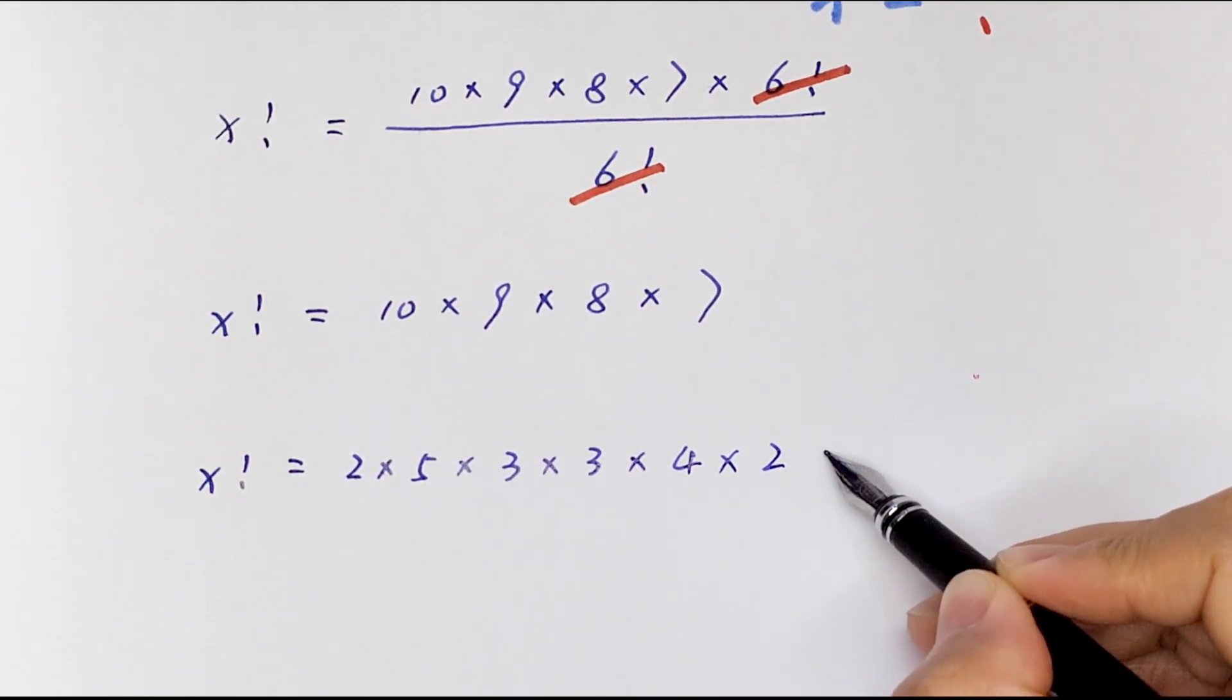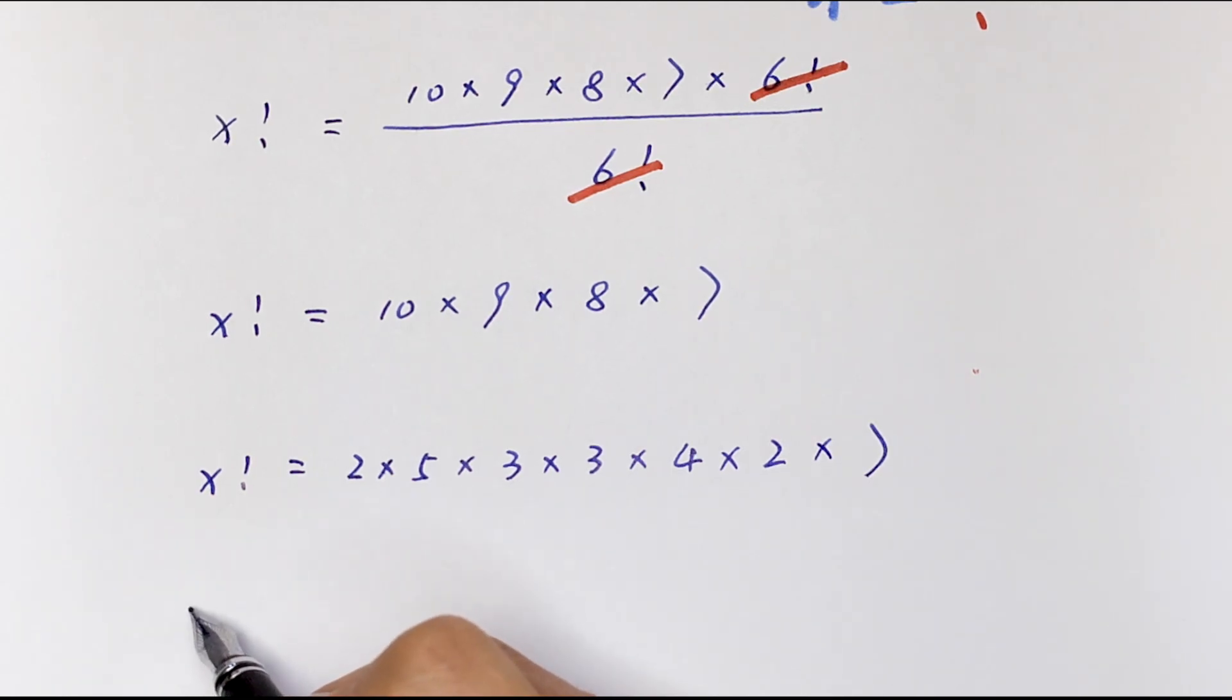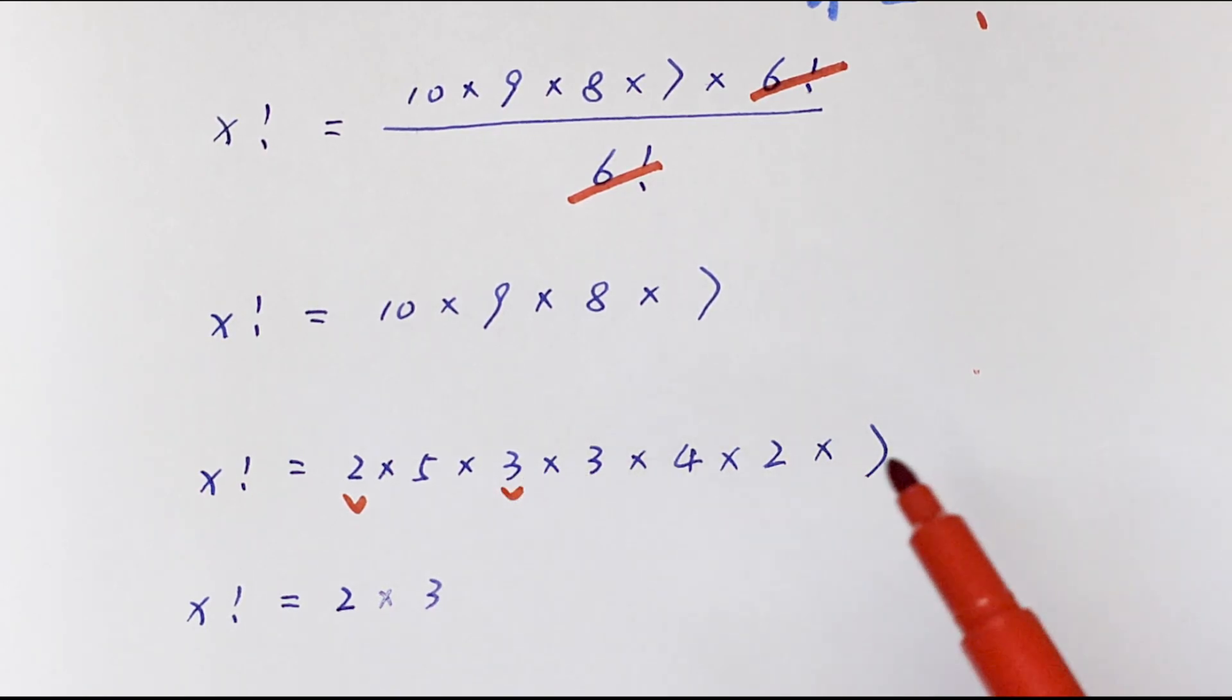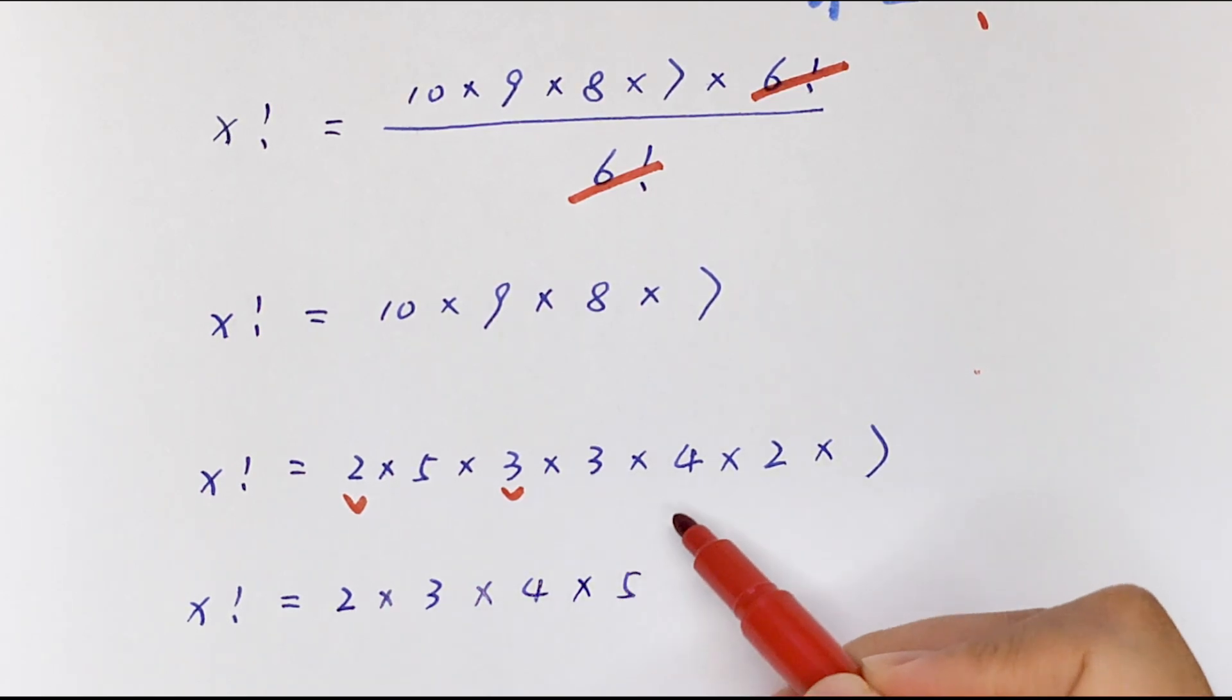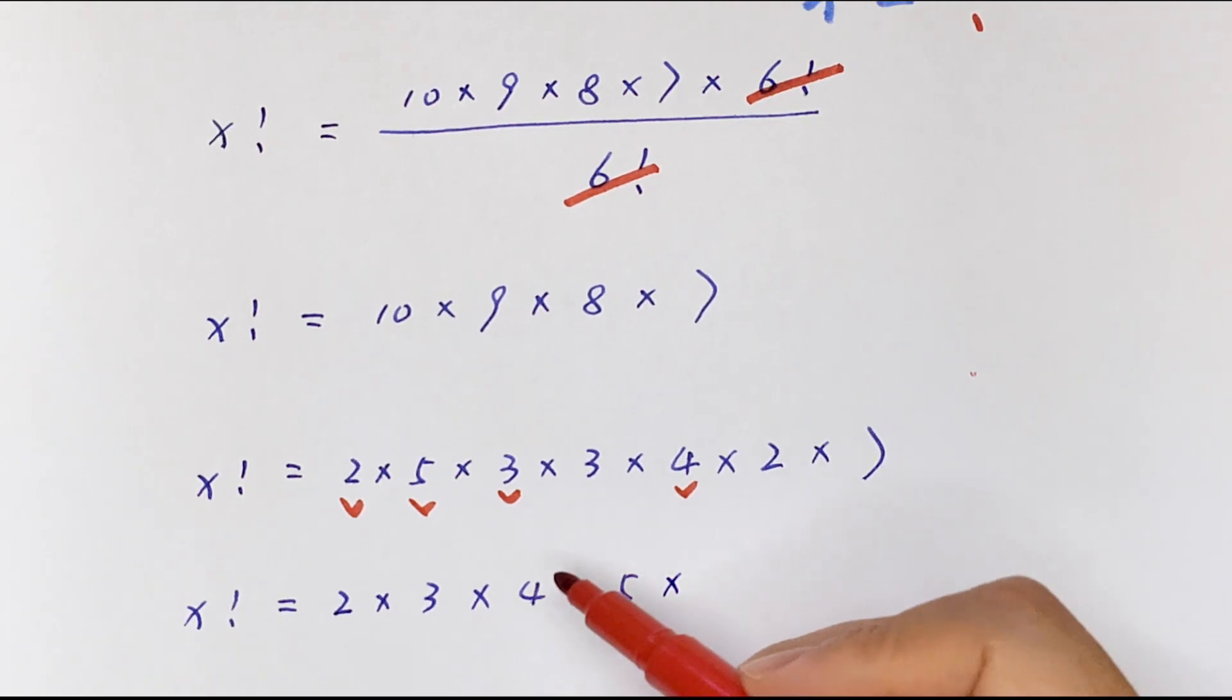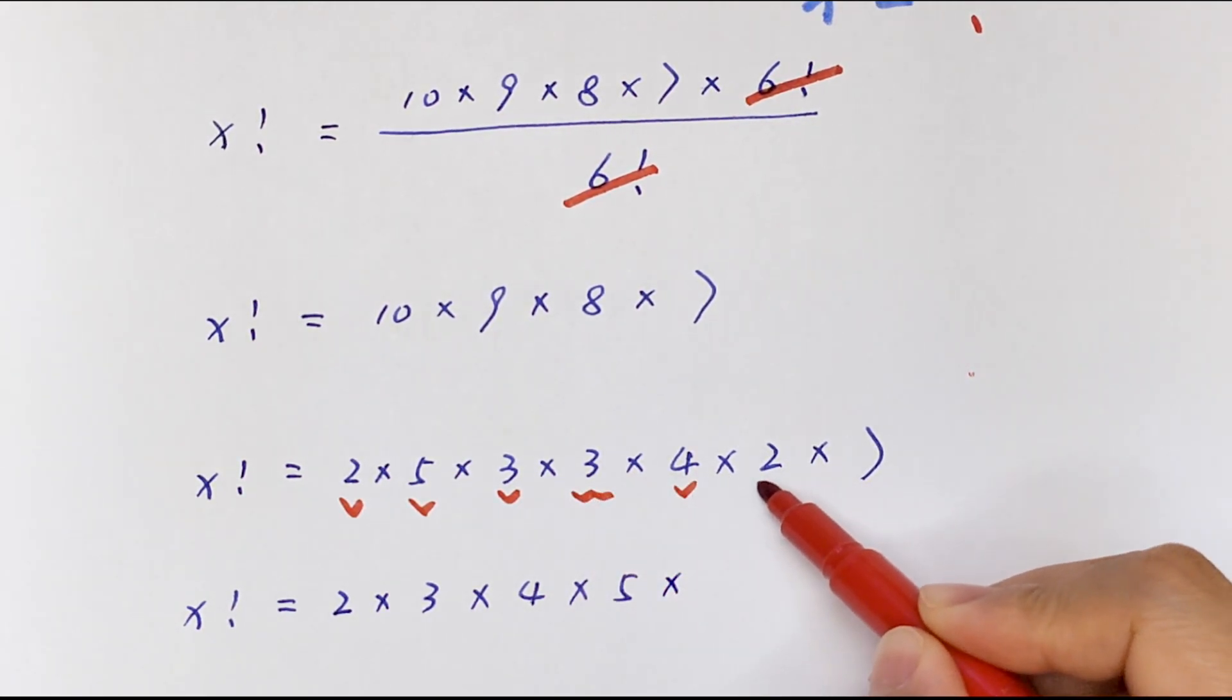So x factorial is equal to 2 times 3 times 4 times 5 times 3 times 2 is 6, then times 7.